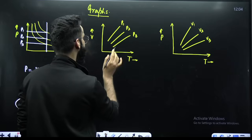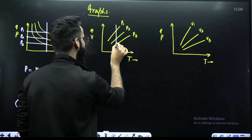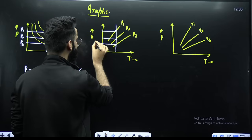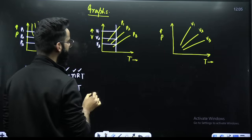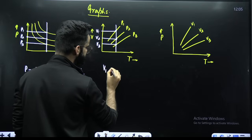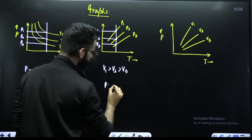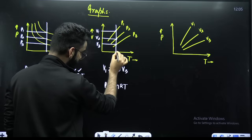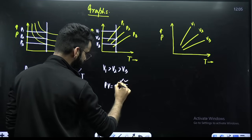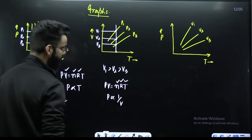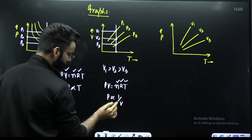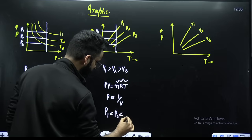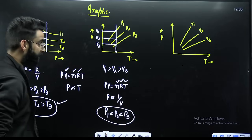Similarly for volume versus temperature graphs, you have to check the pressures. Draw a straight line, mark these points, get the corresponding y-axis values: v1 > v2 > v3. Using PV = nRT with temperature constant, pressure is inversely proportional to volume — more the volume, lesser the pressure. So v1 being more means p1 is less than p2, which is less than p3.